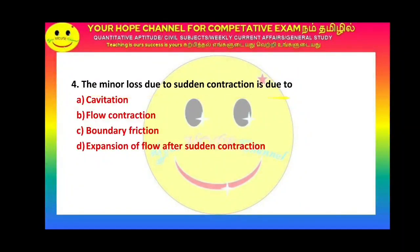Next question: The minor loss due to sudden contraction is due to what? Minor losses include loss due to sudden enlargement, sudden contraction, head loss at entry, head loss at exit, head loss at bends, and head loss at gradual expansion. The answer is: expansion of flow after sudden contraction.